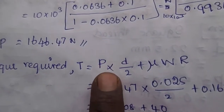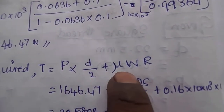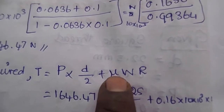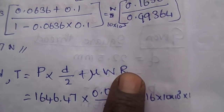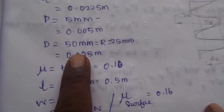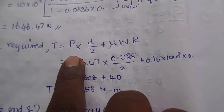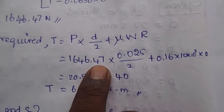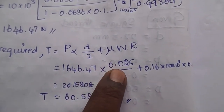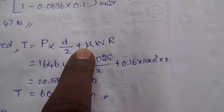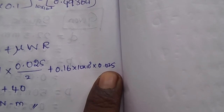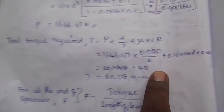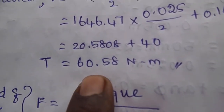Now we are going to calculate the torque. The formula involves the tangential force into mean diameter divided by 2, plus the friction torque at the bearing surface. W is 10 kN, the mean diameter D is 25 mm, and the bearing surface coefficient of friction is 0.16 with mean bearing radius 0.025 m. The total torque is equal to 60.58 Nm.